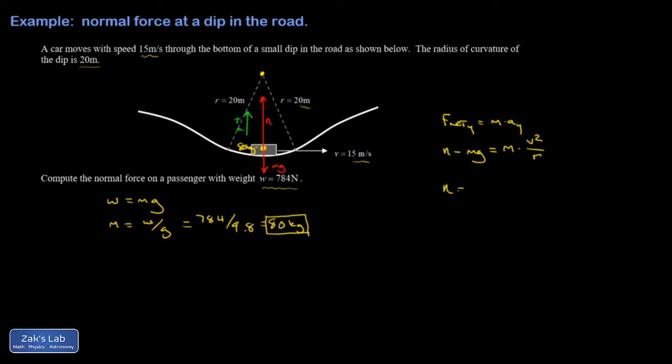I'm able to solve for the normal force on this person. So it's going to be m times the quantity g plus V squared over R. I'm ready to just go ahead and solve.